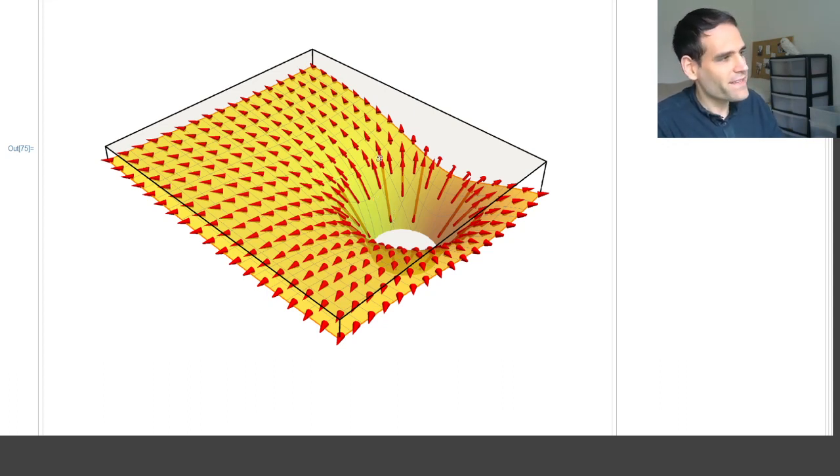This is the gradient of the gravitational potential, but if you do the minus gradient you would just reverse the direction of all these arrows and this would represent the gravitational field of a mass.